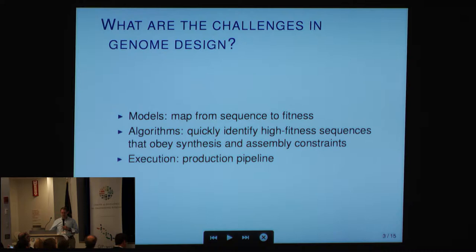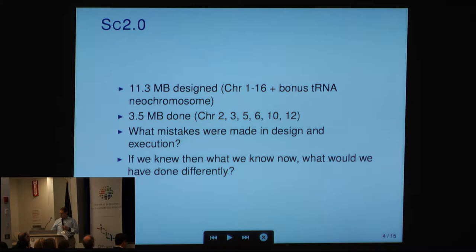Currently 11.3 megabases designed — chromosomes 1 to 16 plus the bonus tRNA neochromosome that Patrick talked about. What I will focus on is results with the three and a half megabases that are done: chromosomes 2, 3, 5, 6, 10, and 12 — what mistakes were made in design and execution, and what will we do differently?